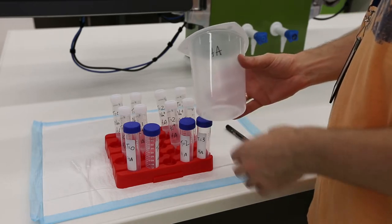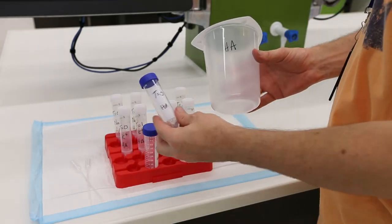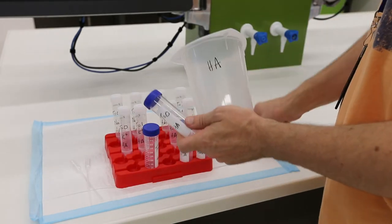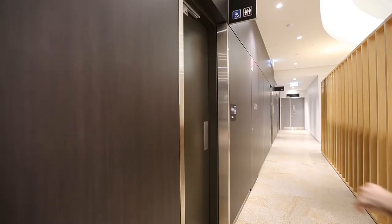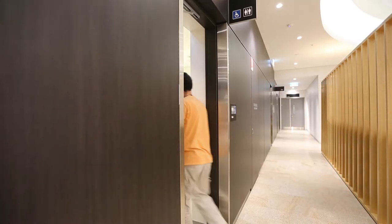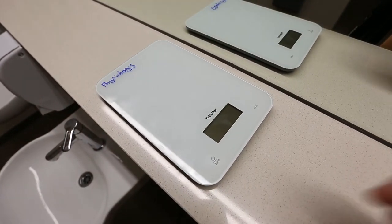To collect a sample, you will need to take your beaker, the 50 ml falcon tube for the respective time point (in this case T equals 0), and your texter. In the bathrooms you will find a set of kitchen scales. To turn them on, press the tare button.